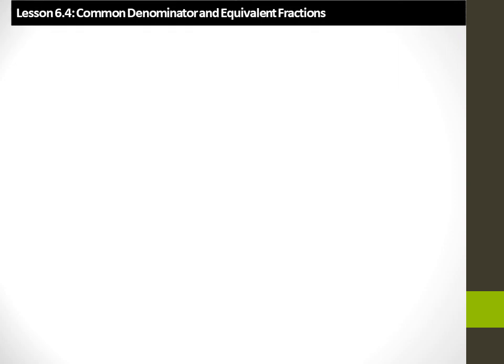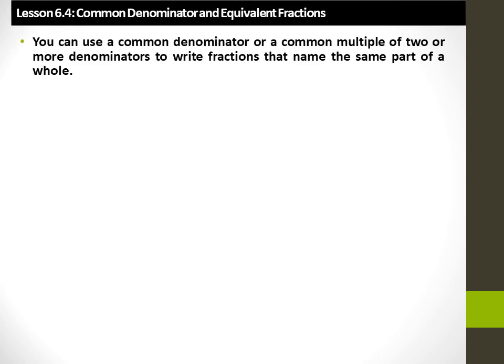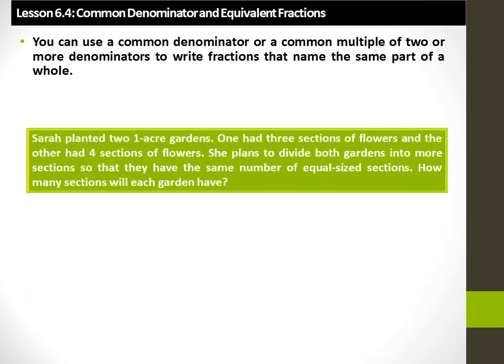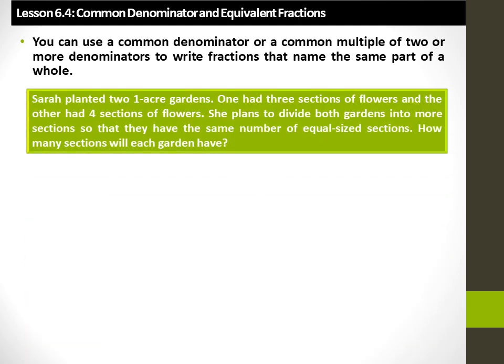Common denominator and equivalent fractions. You can use a common denominator — a common multiple of two or more denominators — to write fractions that name the same part of the whole. Sarah planted two one-acre gardens: one had three sections of flowers and the other had four sections. She plans to divide both gardens into more sections so that they have the same number of equal-sized sections. How many sections will each garden have?